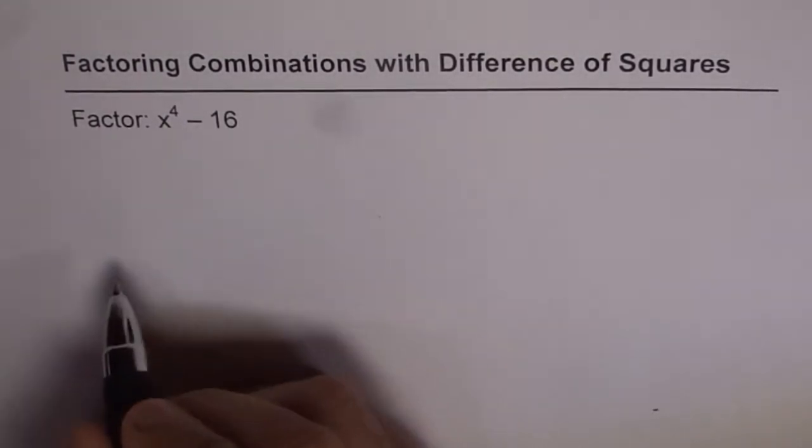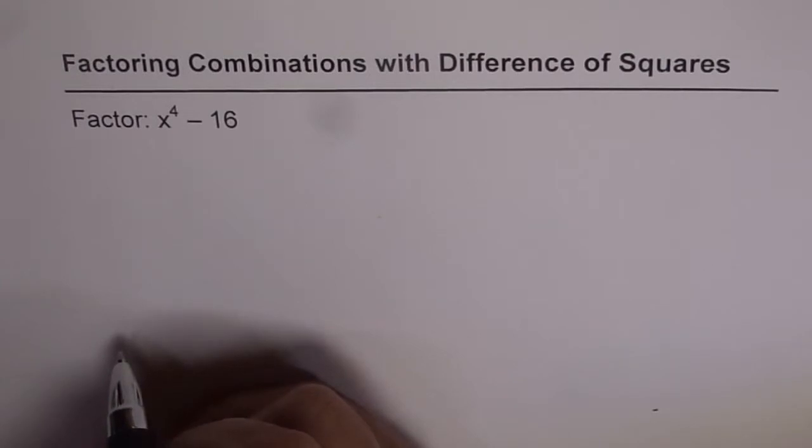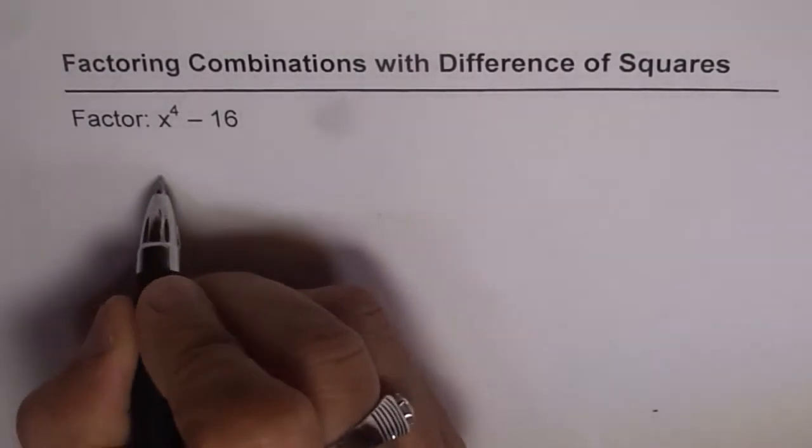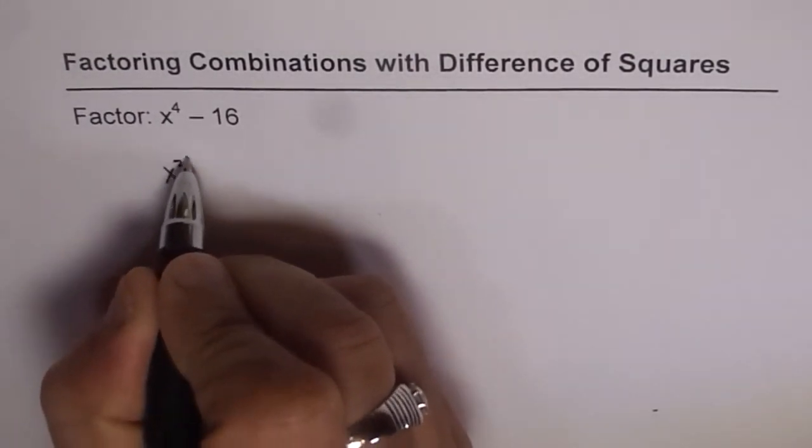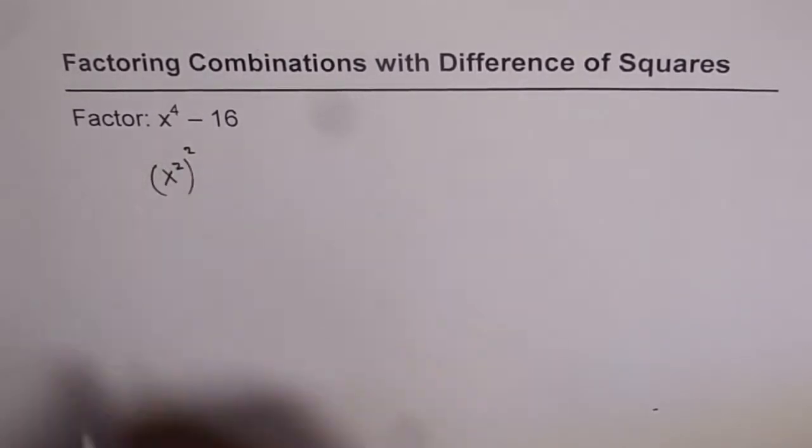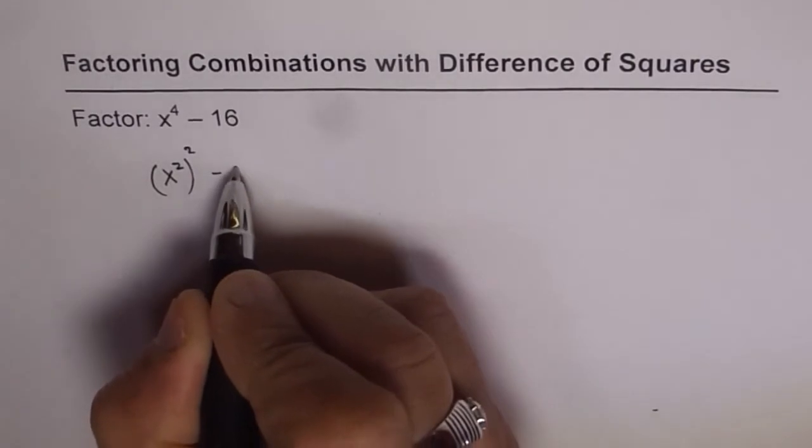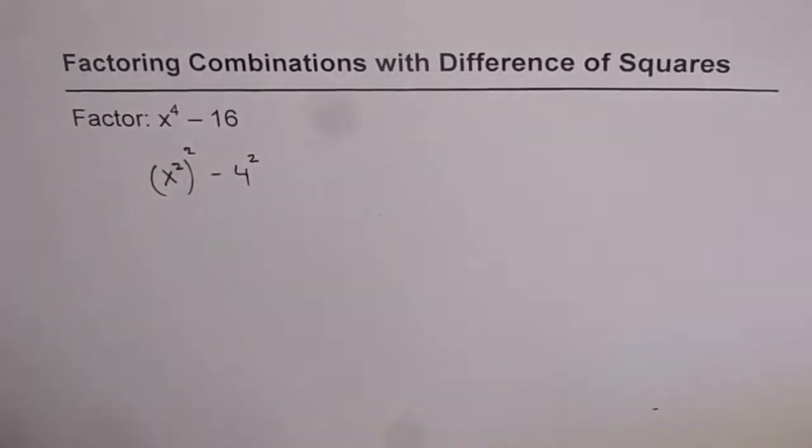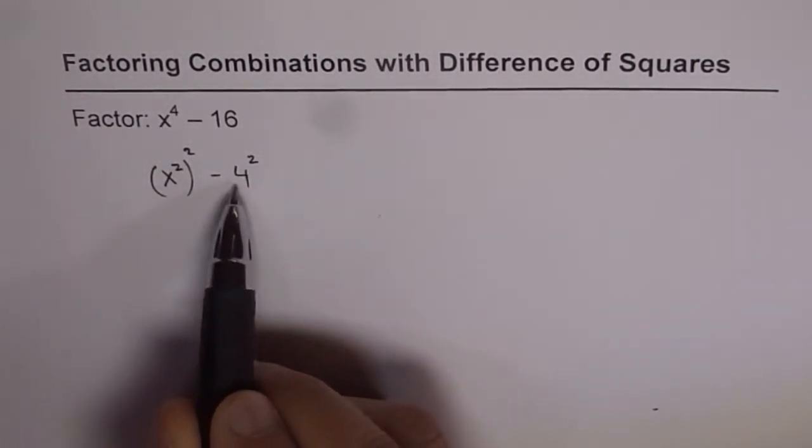This can be treated as a difference of squares. We can write x to the power of 4 as x squared whole squared, which equals x to the power of 4. And 16 can be written as 4 squared. So it is a difference of squares.